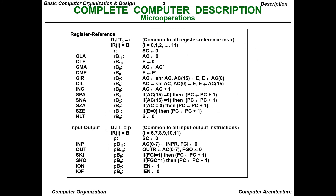For register reference instructions, IR bits I (0 to 11) apply. The instructions include: CLA — clear accumulator; clear exponent flag; CMA — complement accumulator; CME — complement exponent flag; CIR — circular right shift; CIL — circular left shift accumulator; INC — increment accumulator; and SPA — skip if accumulator is positive.